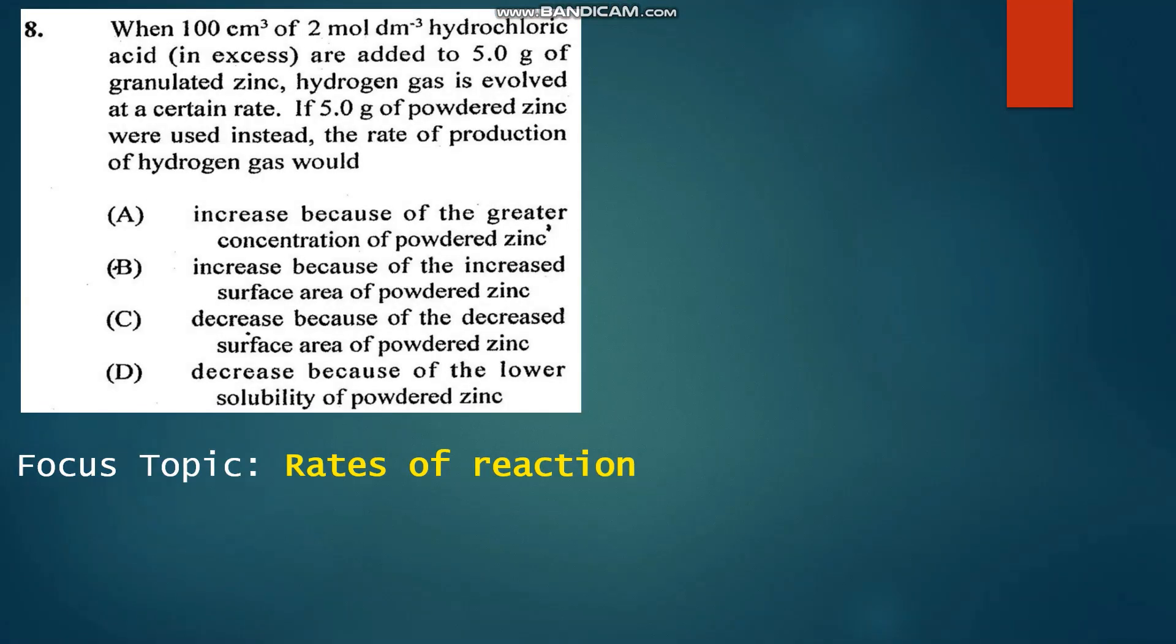Number eight: When 100 cubic centimeters of 2 molar hydrochloric acid in excess are added to 5 grams of granulated zinc, hydrogen gas is evolved at a certain rate. If 5.0 grams of powdered zinc were used instead, the rate of production of hydrogen gas would... The only difference is the powdered zinc in the second case versus the granulated zinc. In the powdered form, a substance would have a greater surface area than when it is granulated, and so we expect that the rate of reaction would increase because of the greater surface area. So that would be B.